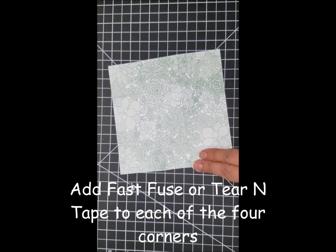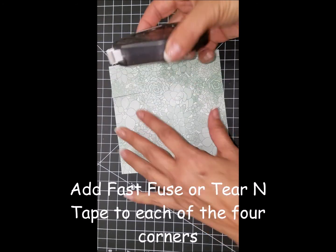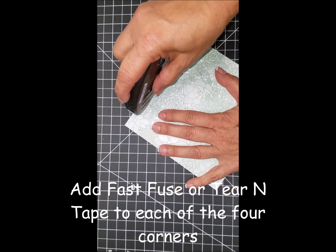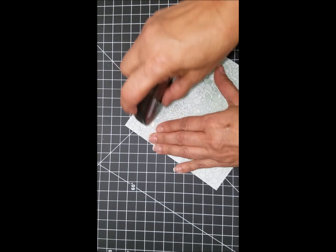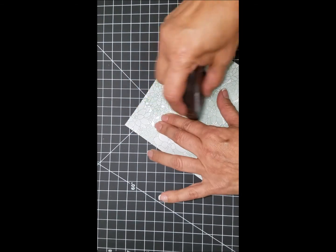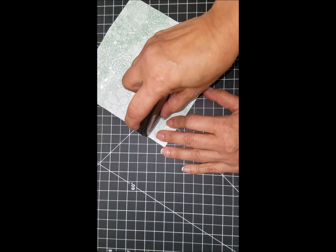Now I'm going to put some fast fuse or you can use tear and tape, and add some adhesive to all four corners of the designer series paper.